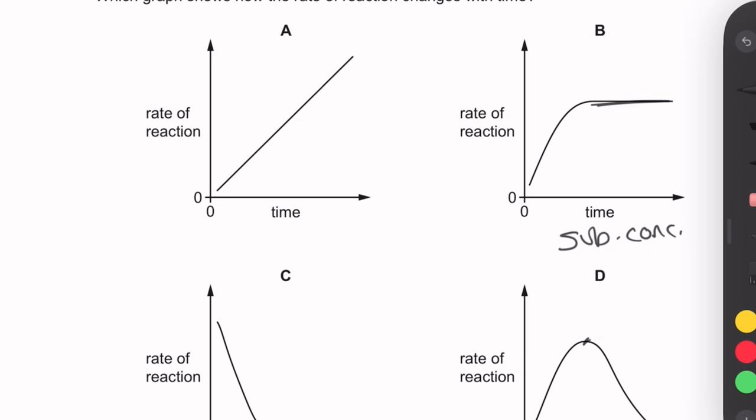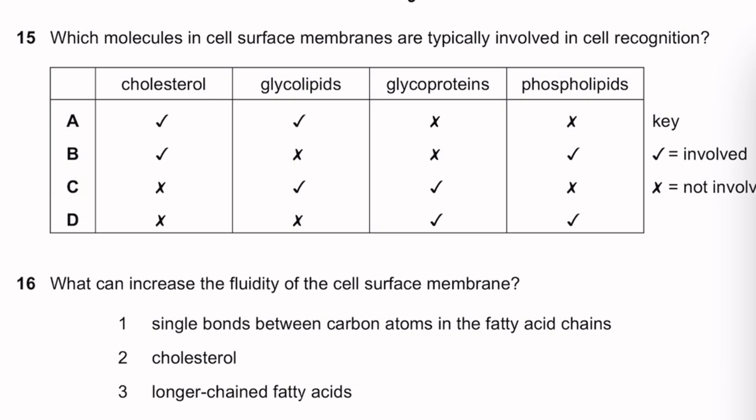Question 15: Which molecules in the cell surface membrane are typically involved in cell recognition? Glycolipids and glycoproteins are involved in cell recognition. Answer: C.